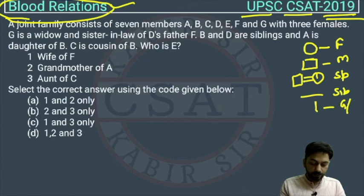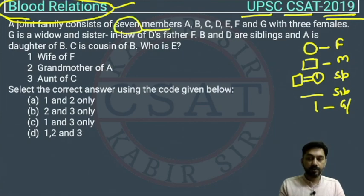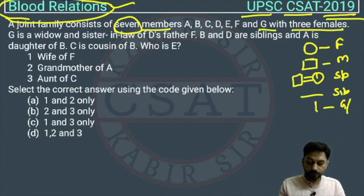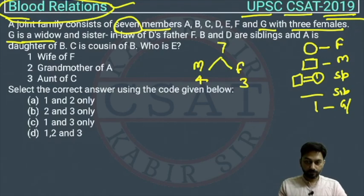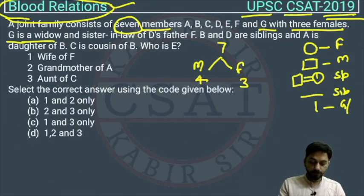Now let's read the question. A joint family consists of seven members: A, B, C, D, E, F, and G, with three females. So there are seven total members, three are female, and four are male. Now let's draw the family tree. G is a widow, so G is female.